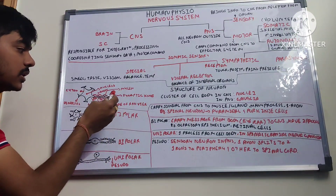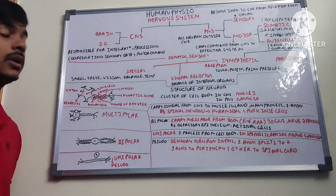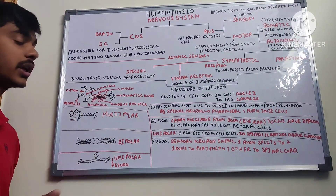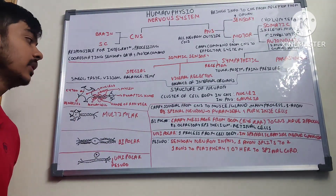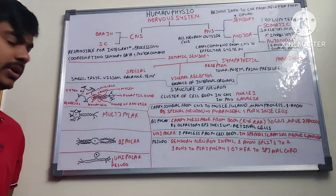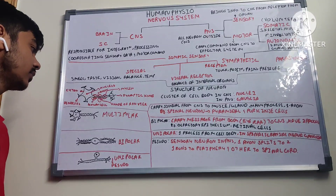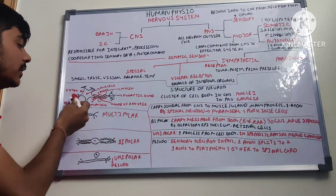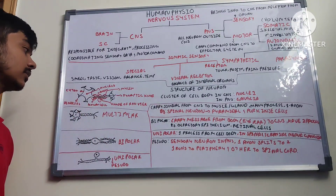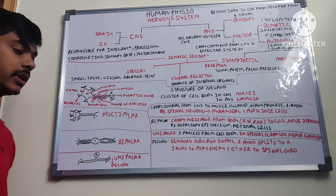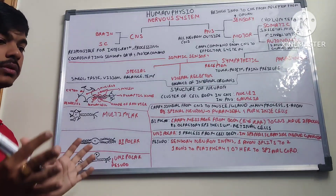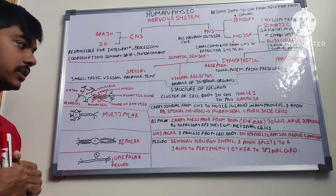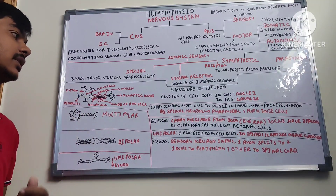At the end of the axon there is a synaptic knob, which consists of neurotransmitters — these can be excitatory or inhibitory. The dendrite is responsible for catching incoming signals.